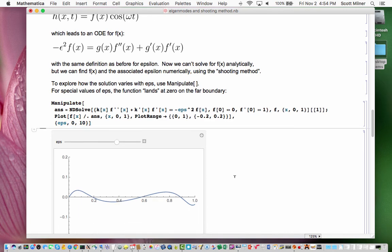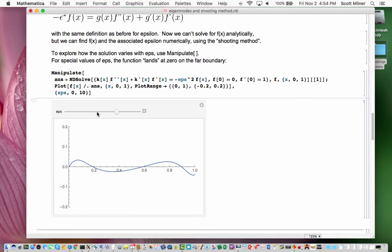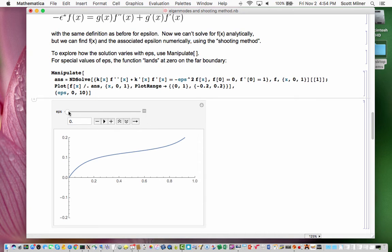So how does that work? Well, just fine. As I increase epsilon, you see that the function curls over more and more, and that for a special value of epsilon of about 1.42 now, I get a mode of the string which is satisfying the far boundary condition.